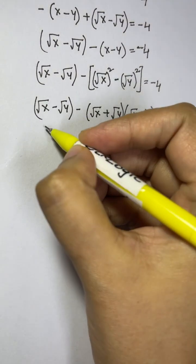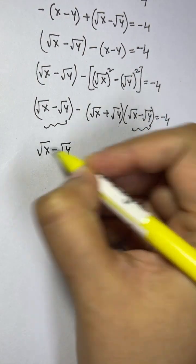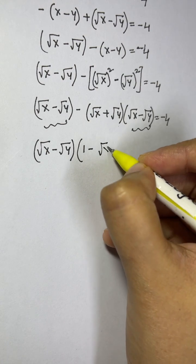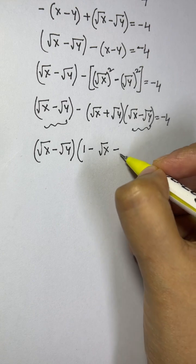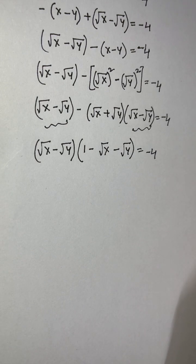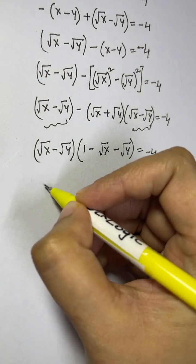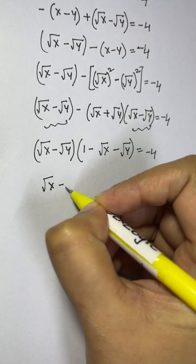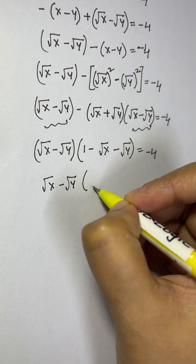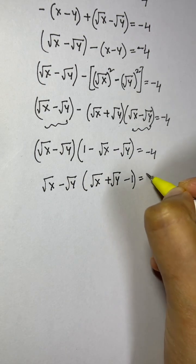Since root x minus root y appears in both terms, I factor it out: root x minus root y times one minus root x plus root y equals negative 4. Taking out the negative signs and rearranging both sides, we get: root x minus root y times root x plus root y minus 1 equals positive 4.